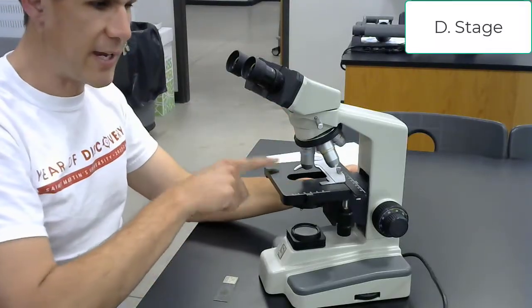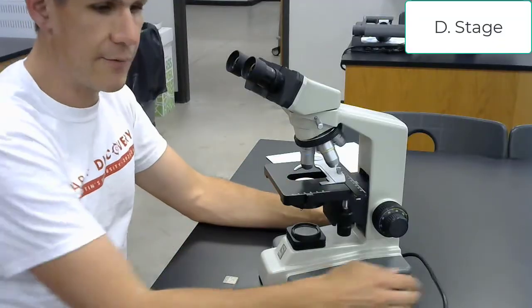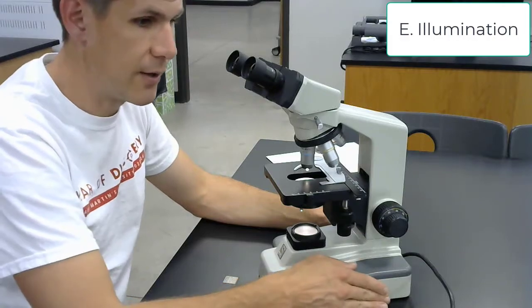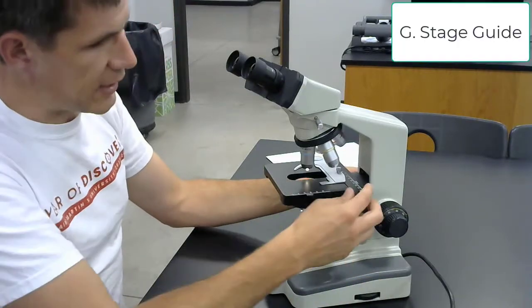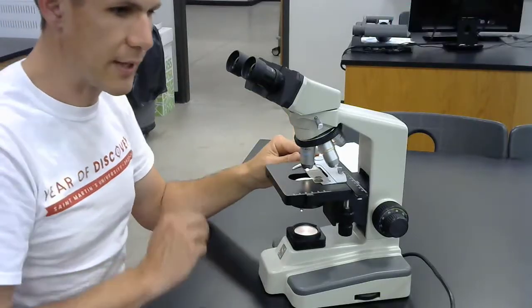Below this is the stage, which is this black surface right here, and the hole in the black surface gives rise to the illumination, which can be turned on and the light can be adjusted. We also see here the stage guide, which allows us to put a slide on and hold it in place.